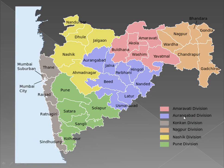Let's first start with Amravati division, shown here in light red color. Amravati division comprises the districts of Amravati, Akola, Buldhana, Washim, and Yavatmal.